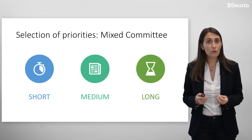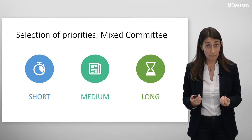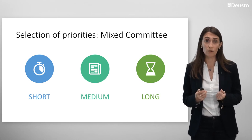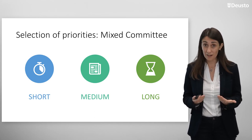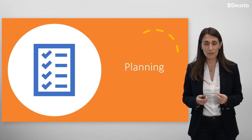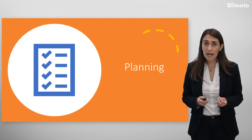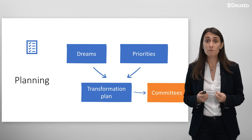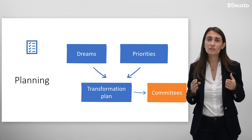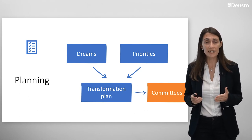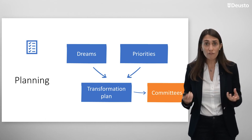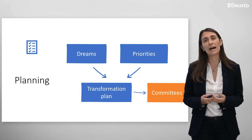Once priorities have been established, the school moves into action — that is planning, the last phase. In planning, committees are created based on the dreams and priorities. Each educational center establishes its own transformation plan, creating different committees according to their needs: committees for learning, infrastructure, coexistence, conflict resolution, family involvement, or any other needs the school has in their community — each forming a mixed committee with representation of the entire community. Those mixed committees need to be organized and coordinated among themselves. For that purpose, the school creates a management committee, which supervises and takes an overview of the activities that these other committees are carrying out.